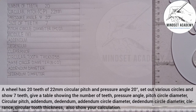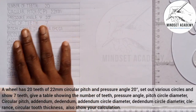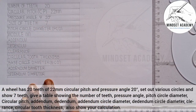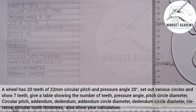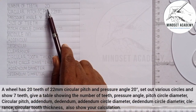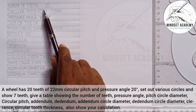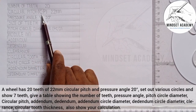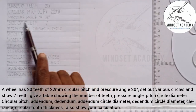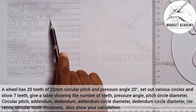The first thing you do is write the terminologies — the parameters given — in tabular form. From the question we are given four parameters: the number of teeth is 20, the circular pitch is 22 mm, the pressure angle is 20 degrees, and the size of teeth is 7.